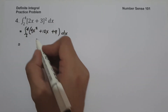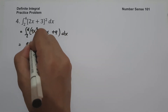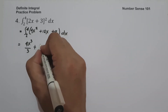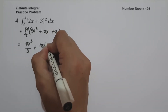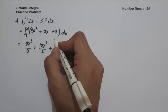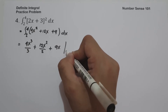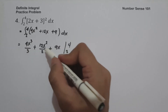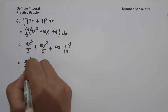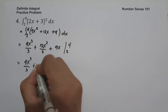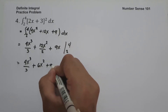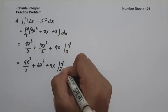The anti-derivative of 4x squared is 4x cubed over 3. The anti-derivative of 12x is 12x squared over 2, which simplifies to 6x squared. The anti-derivative of 9 is 9x. So we have 4x cubed over 3 plus 6x squared plus 9x, evaluated from 2 to 4.